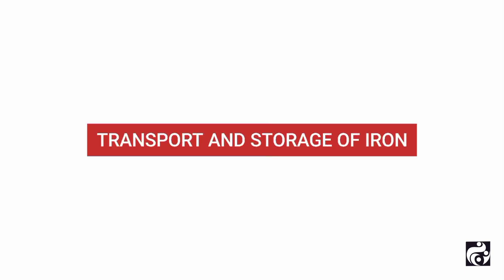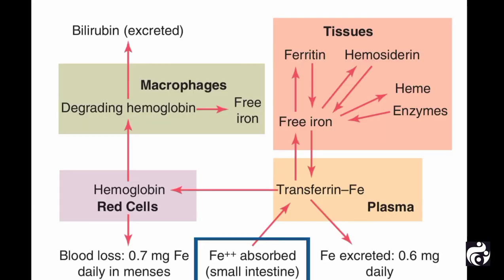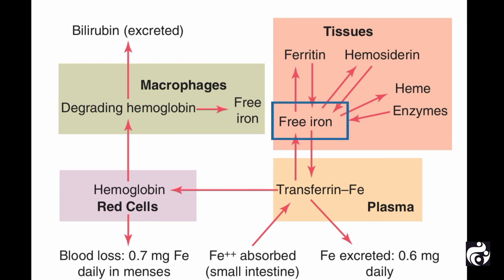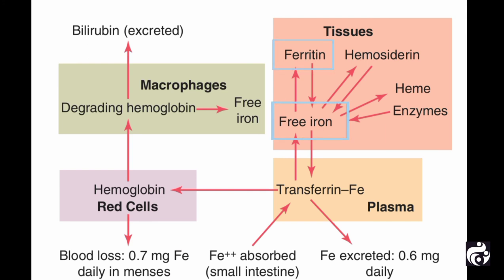Now let's look at the transport and storage of iron. When iron is absorbed from the small intestine, it immediately combines in the blood plasma with a beta globulin, apotransferrin, to form transferrin, which is then transported in plasma. The iron is loosely bound in transferrin and consequently can be released to any tissue cell at any point in the body. In the cell cytoplasm, iron combines mainly with a protein, apoferritin, to form ferritin. This iron stored as ferritin is called storage iron.